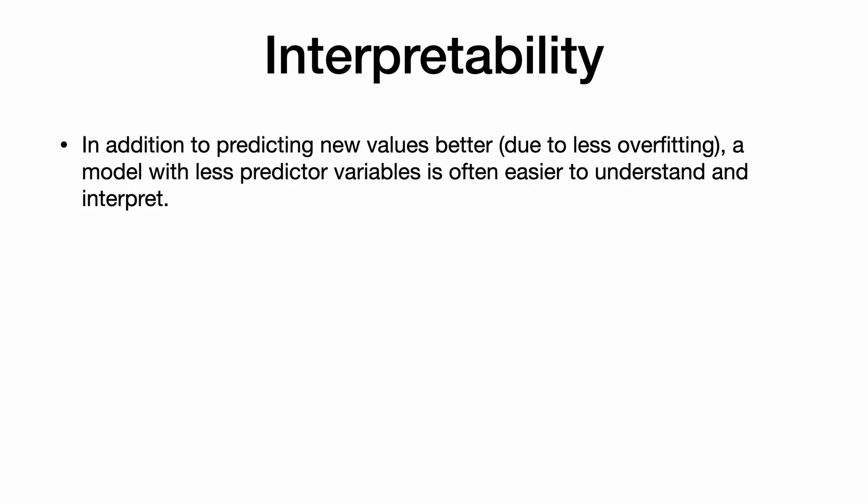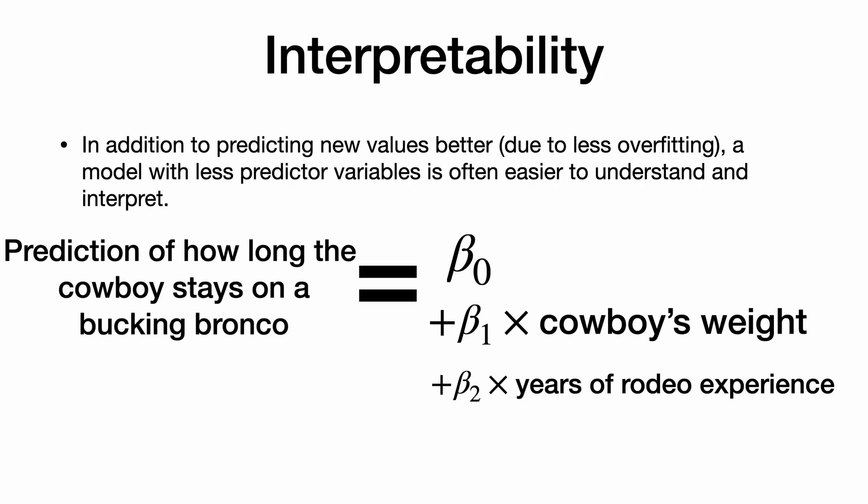In addition to predicting new values better due to less overfitting, a model with less predictors is often easier to understand and interpret. I like my equation that predicts how long a cowboy stays on his bucking bronco only from the weight and experience, rather than using hundreds and hundreds of things that don't matter that make the equation so hard to understand. Now, how can we select these variables? Well, let's learn about the lasso.